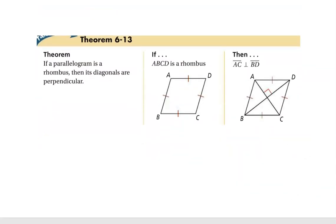Theorem 6.13: if a parallelogram is a rhombus, the diagonals are perpendicular. For a rhombus, since all four sides are the same, when you push those two opposite corners in, it forces right angles into the middle. So you'll have four right angles right in the middle, and that's going to help you find missing angles. All the triangles formed have angles adding up to 180, and one of those angles is always a right angle.